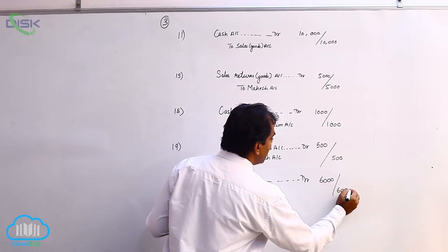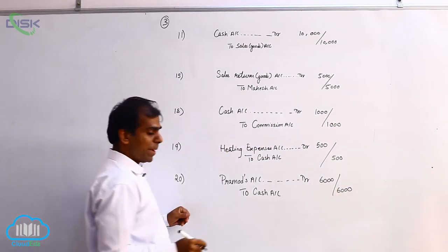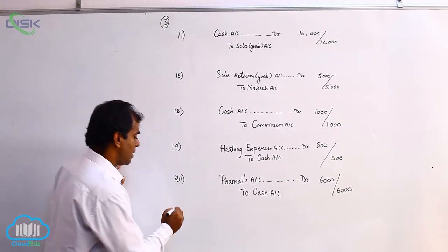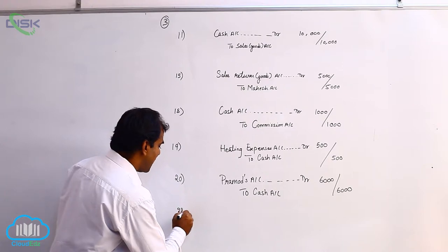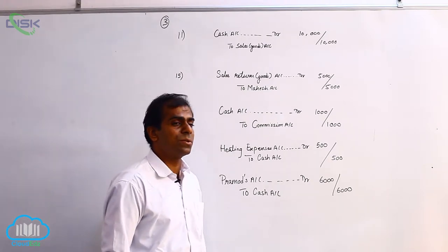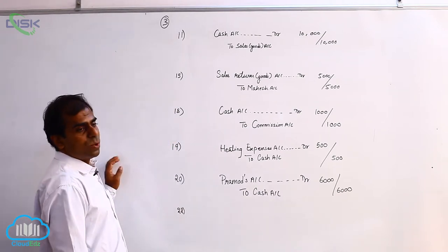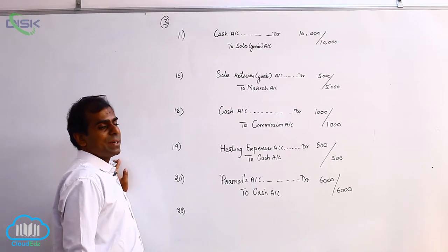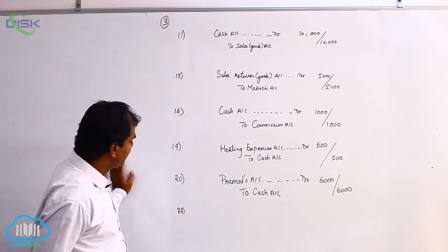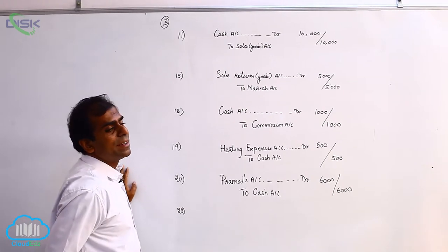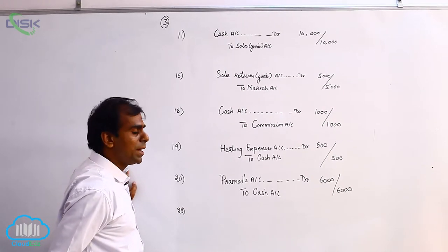Your narration would be being cash paid to Pramodh. Now the next transaction is on 22nd. It states that returned goods to Radhika. If you see the previous transactions, we purchased goods from Radhika. So maybe because of some problem, we are returning some portion of goods to her.